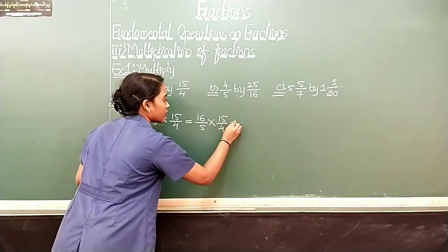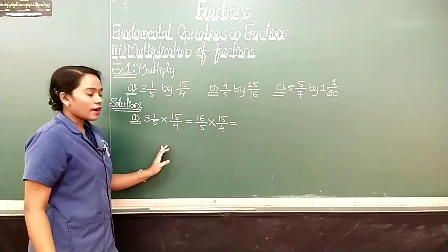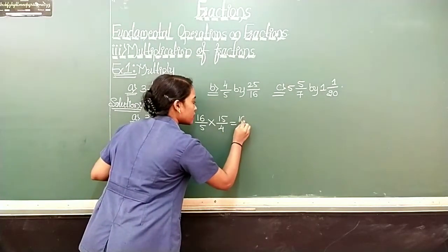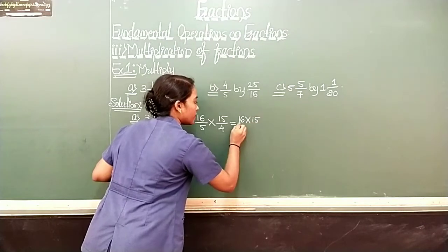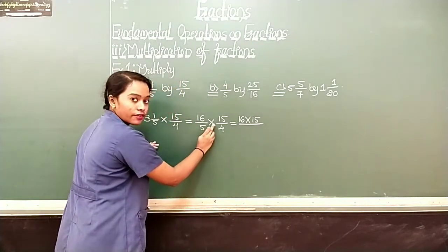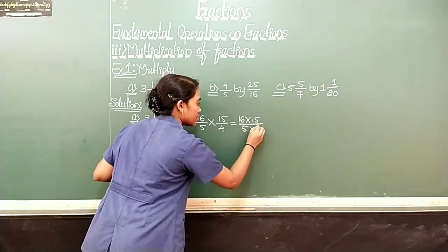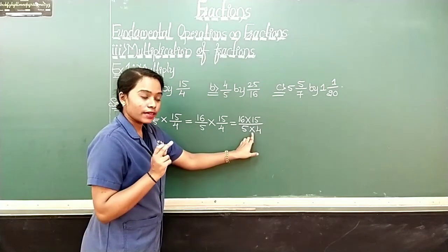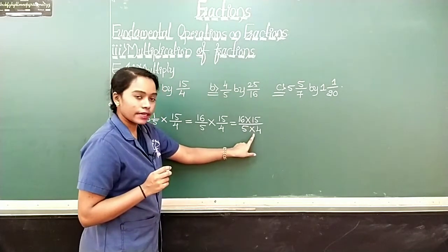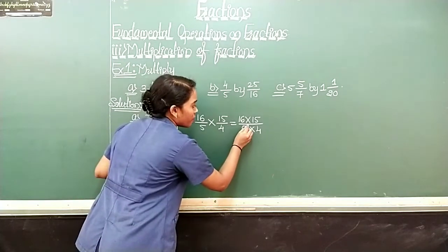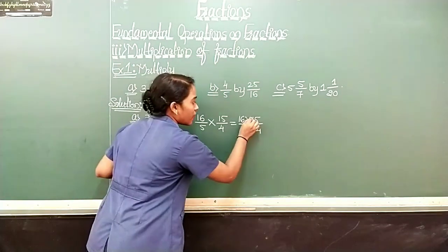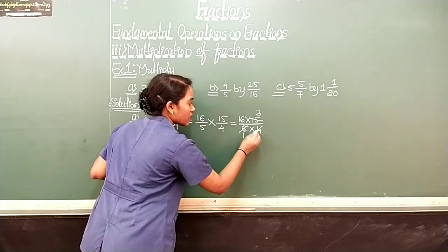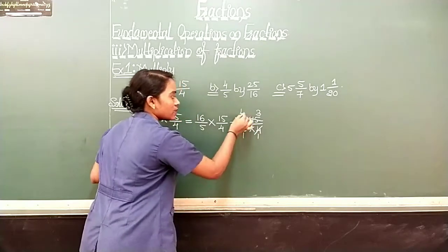Write as it is, which is equal to. After this, you have to multiply the two numerators. Write it like this: 16 into 15 upon 5 into 4. Then you have to cancel out the common factors from the numerator and denominator. See here: 5 ones are 5, 5 threes are 15. Now 16 and 4 — 4 ones are 4, 4 fours are 16.